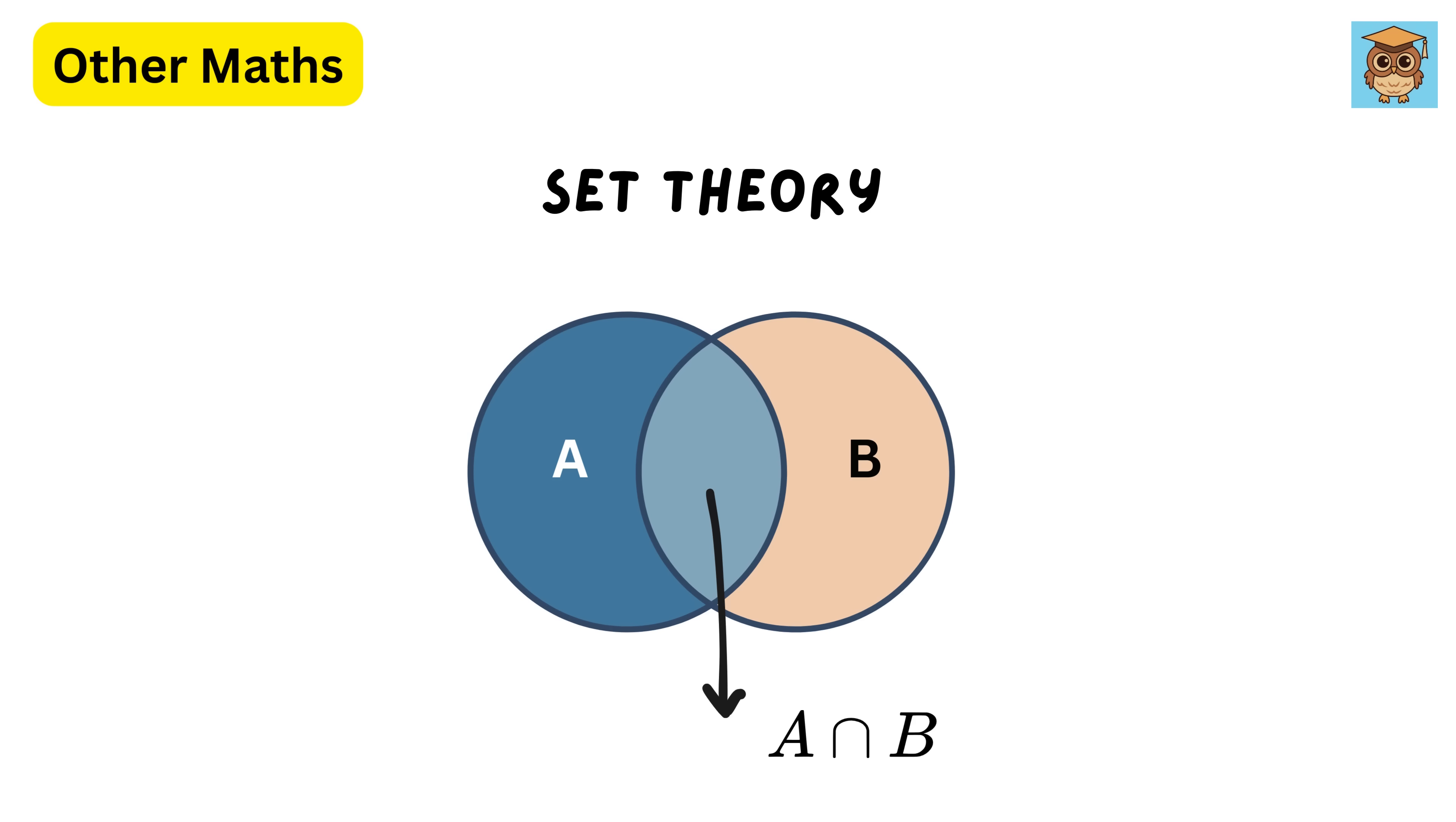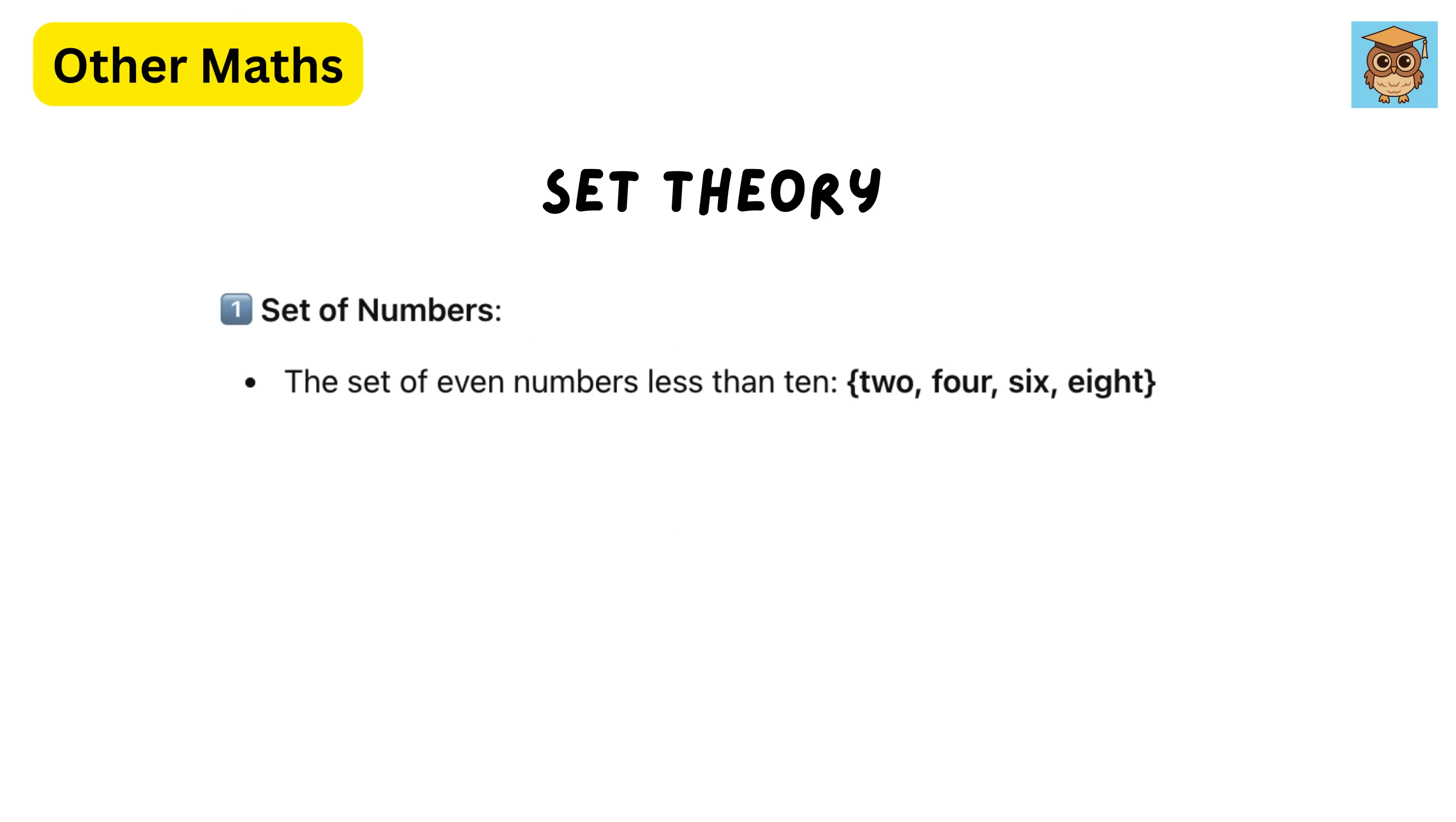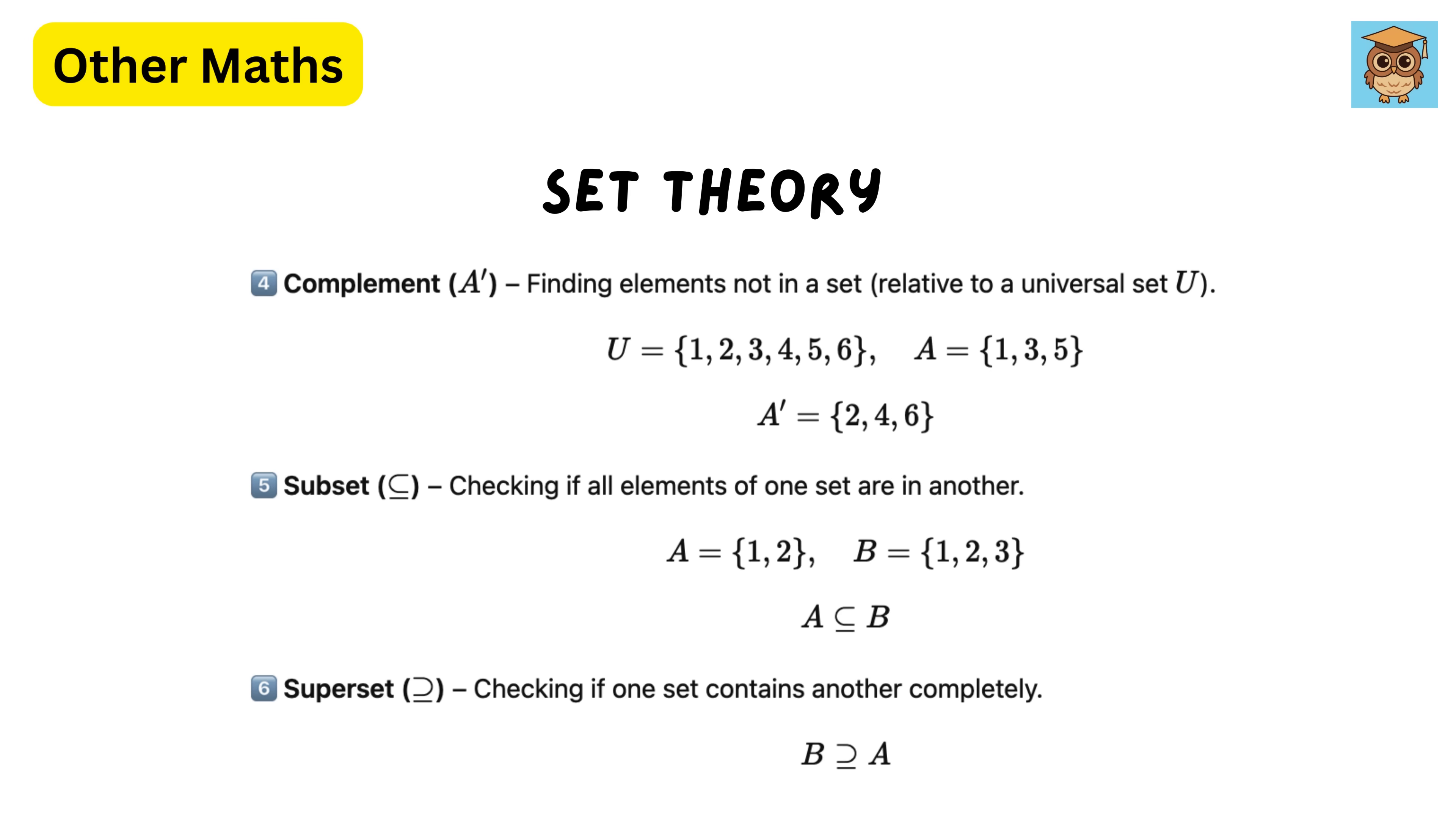Set theory deals with collections of objects, called sets, and the rules governing them. At its core, a set is just a group of things such as numbers, letters, or people which are defined clearly. Elements are the things inside the set. These are the key operations we do on sets.